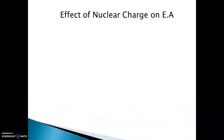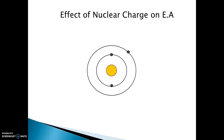Now let's see how nuclear charge affects electron affinity. For example, let's take lithium having one electron in its valence shell. If one more electron is added it becomes beryllium, then boron, carbon, nitrogen, oxygen, fluorine, and neon. With the addition of each electron, nuclear charge also increases and the number of electrons also increases, but electrons are added in the same shell.